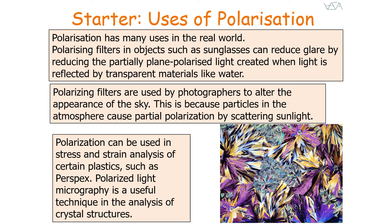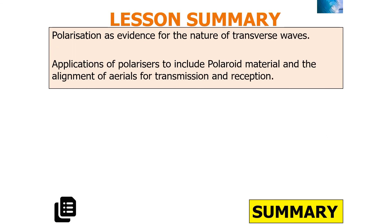Polarisation has many uses in the real world. Polarising filters in sunglasses can reduce glare by filtering out partially plane-polarised light created when light is reflected by transparent materials such as water or glass. Polarising filters can also be used by photographers to alter the appearance of the sky, as atmospheric particles can cause partial polarisation by scattering sunlight. Additionally, polarisation can be used in stress and strain analysis of certain plastics such as perspex, and polarised light micrography is a useful technique in the analysis of crystal structures.